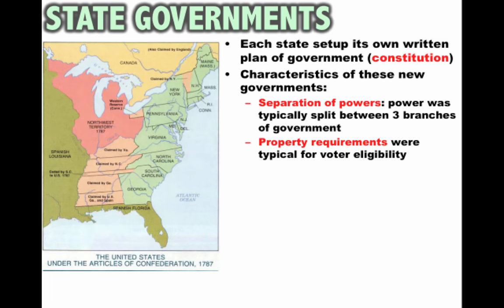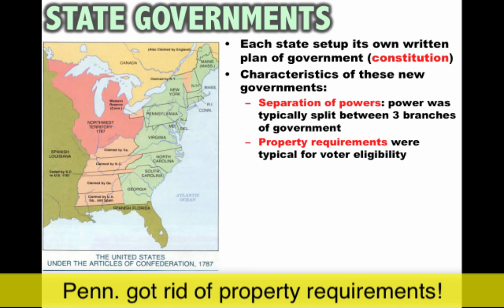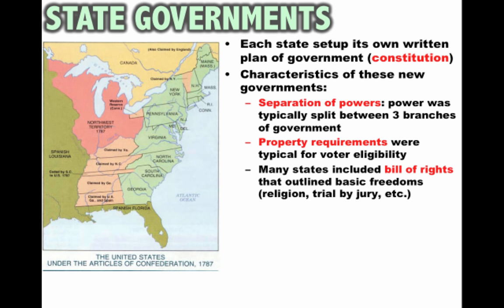Some states had different property requirements for voter eligibility. In fact, many states maintained property qualifications in order to vote. In other words, if you were a white male — sorry, only white males were able to vote in the new nation — you had to have property in order to vote. So the American Revolution didn't change that reality in many states, though in some states it did.